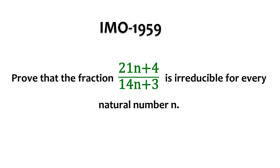Let's see the very first question of the very first Olympiad, that is the one held in 1959. And let's try to solve it. So, the question is: prove that the fraction (21n + 4)/(14n + 3) is irreducible for every natural number n.